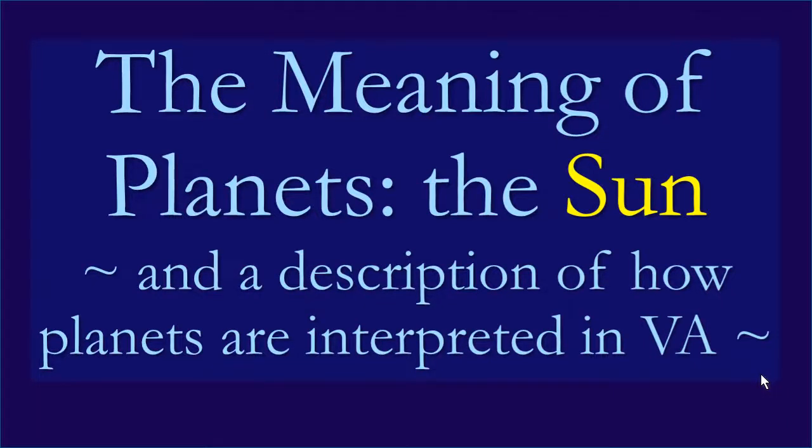Hello. We're going to take a deep dive into the meaning of the planets. We're going to start with the Sun, and in describing the meaning of the Sun in vibrational astrology, we're going to also discuss the basic concepts of how we interpret planets. And of course when we say the word planets, that includes the Sun and the Moon. So in vibrational astrology, we look at the planets as regulating a process.